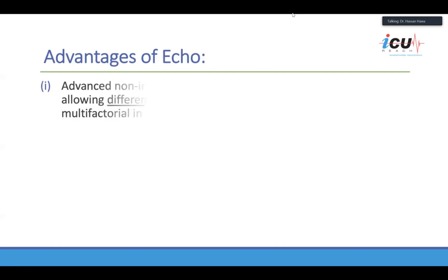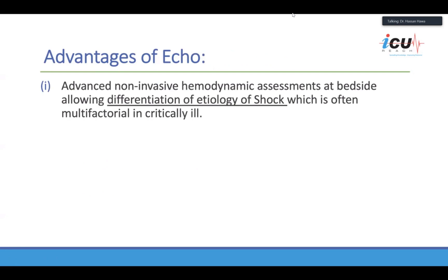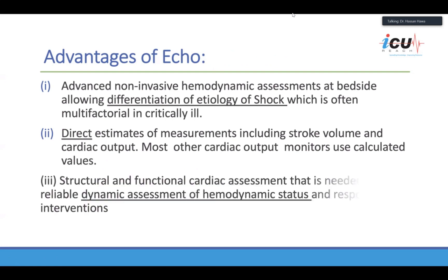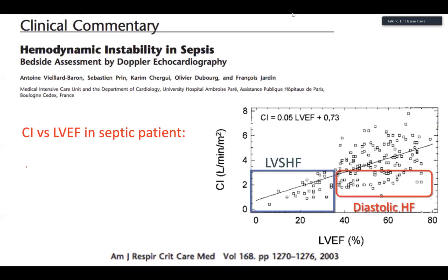The advantages of echo include non-invasive hemodynamic assessment at the bedside and the ability to differentiate different causes of shock. Quite often, we put the echo probe on the heart and discover unexpected findings — such as pericardial tamponade compromising the circulation, or a massive pulmonary embolism. Echo provides direct estimates of stroke volume and cardiac output, and assesses other parts of the heart. As mentioned yesterday, don't rely only on ejection fraction — a significant chunk of patients with diastolic heart failure had adequate ejection fraction but a quite low cardiac index.